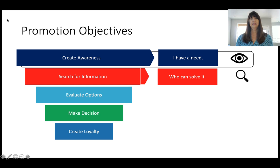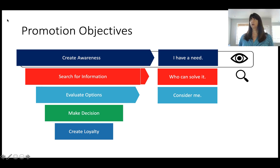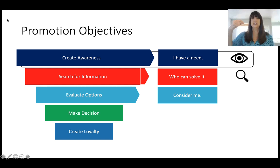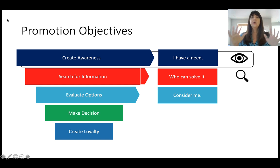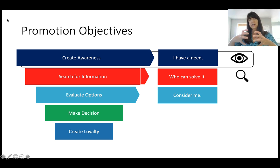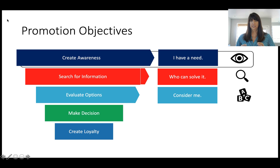The third stage is evaluating options. Now Dr. Grayson has options — places or vehicles she might purchase. As a business, we want to have our hand raised and say, 'Hey, consider me — I've got the vehicle you want at the right price, the right place, the right color.' Your promotion objective is to make sure you are in that consideration set. A consideration set is those options available from your information search. If your company isn't in the consideration set, you've lost the customer from the funnel.